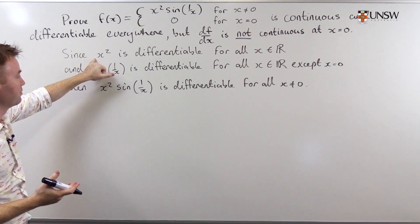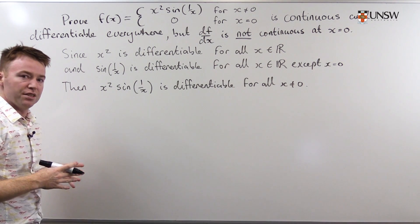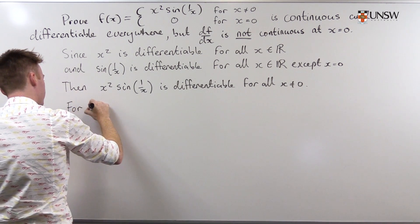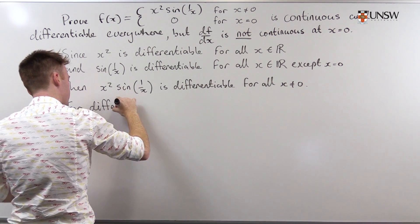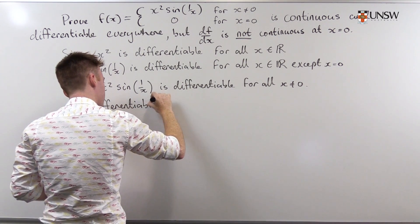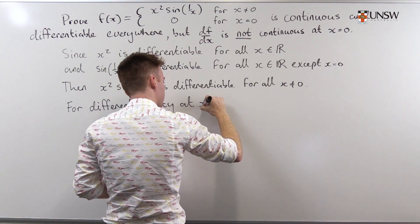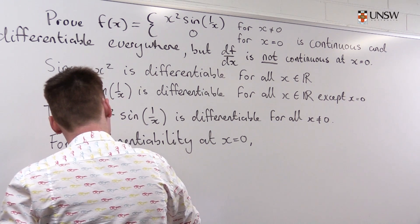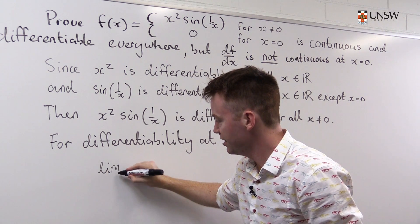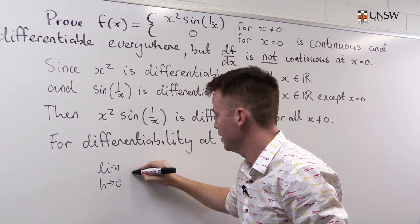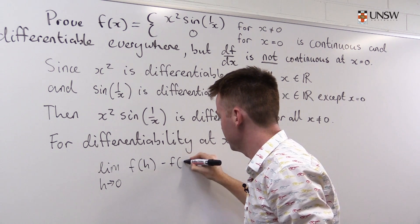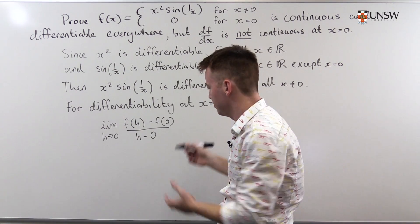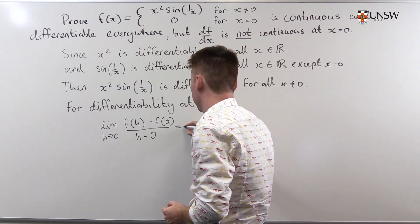By virtue of these two functions, all we need to do is check what happens at x equals 0. We only need to check that the following limit exists: the limit as h approaches 0 of f(h) minus f(0) over h minus 0. We need to check that this exists, and if it does, then the function is differentiable at that point.